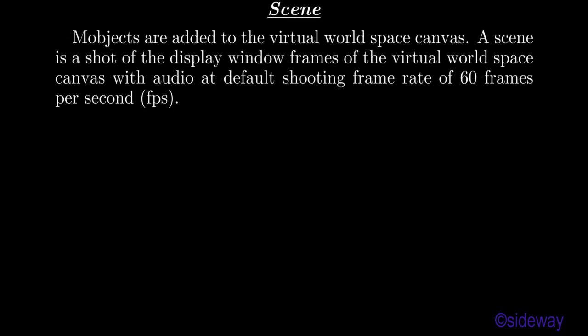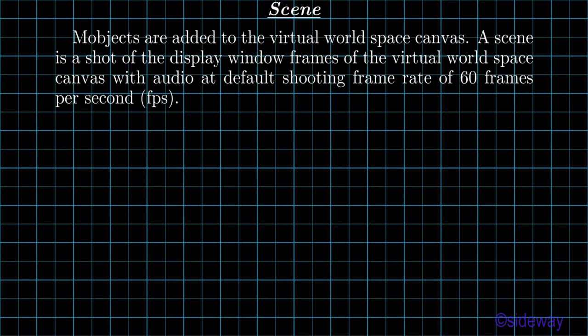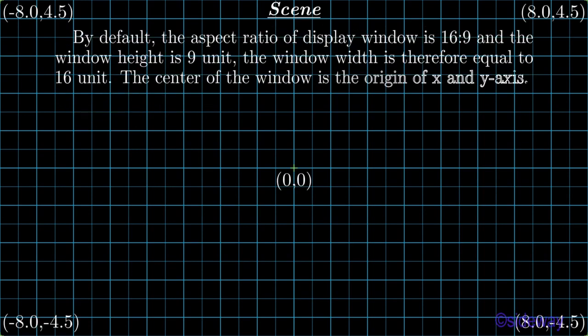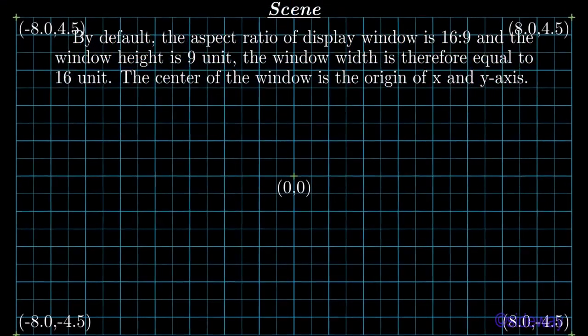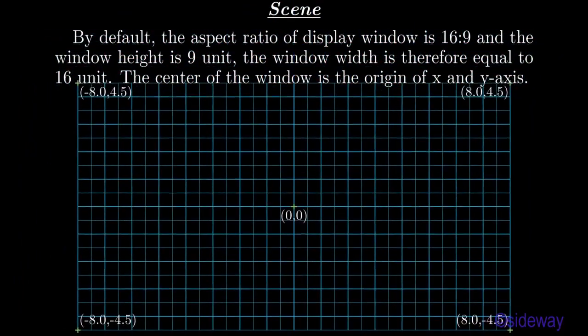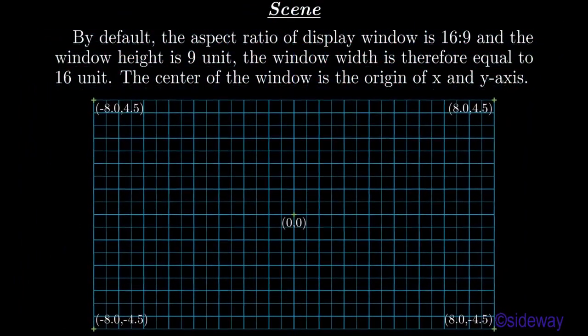Scene objects are added to the virtual world space canvas. A scene is a shot of the display window frames of the virtual world space canvas with audio, at a default shooting frame rate of 60 frames per second. By default, the aspect ratio of the display window is 16 to 9, the window height is 9 units, and the window width is therefore 16 units. The center of the window is the origin of the x and y axes.